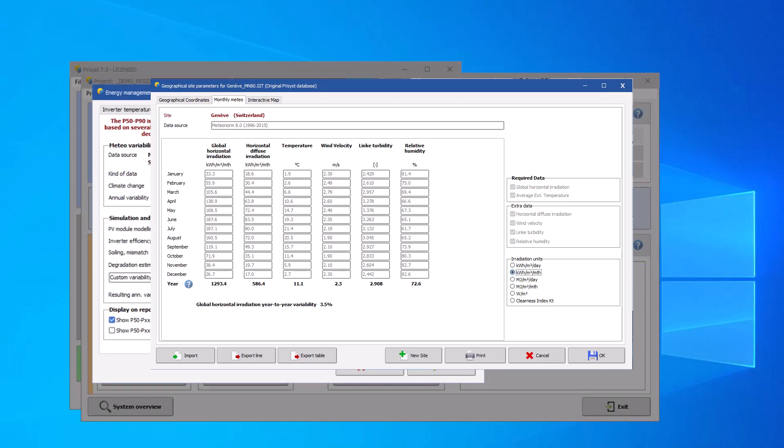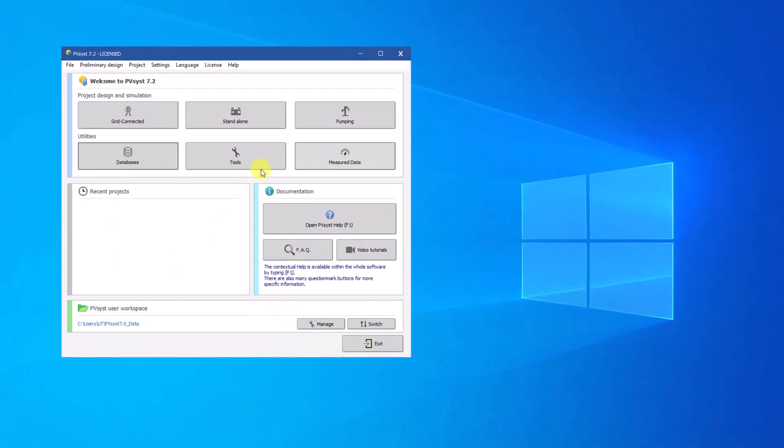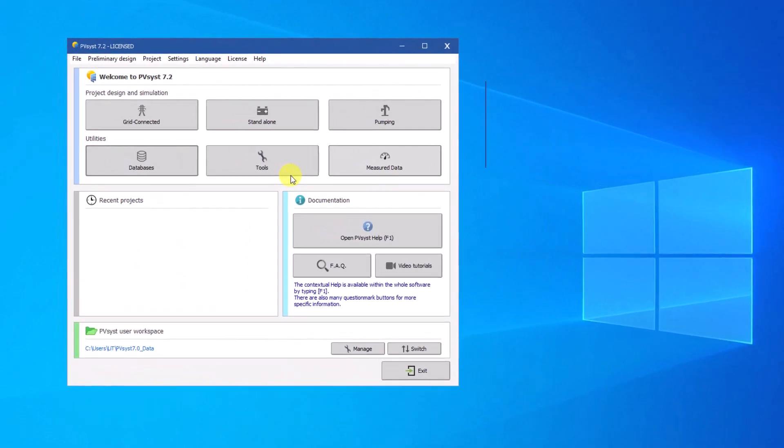The new version of MeteoNorm 7.2, 7.3 and 8.0 provide annual variability for your site. Several Meteo data providers can now deliver multi-year Meteo data sets of 15 to 25 years that you can directly import in PVSyst.